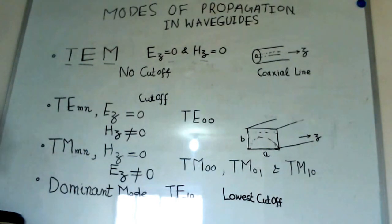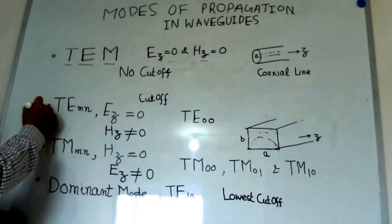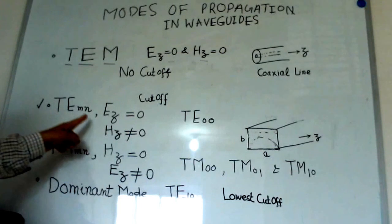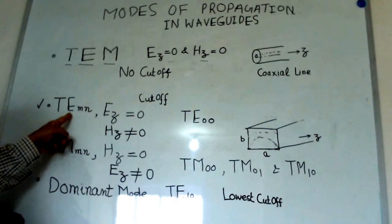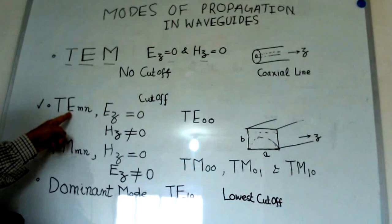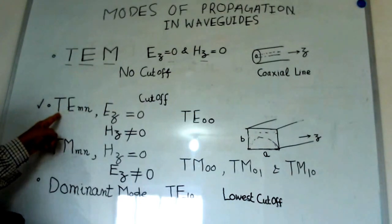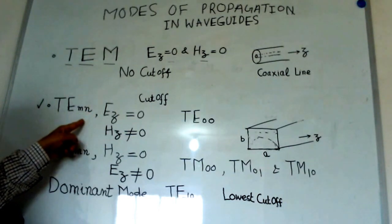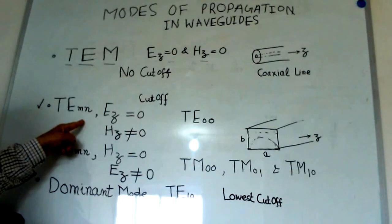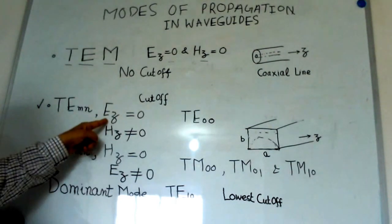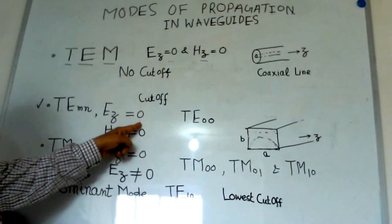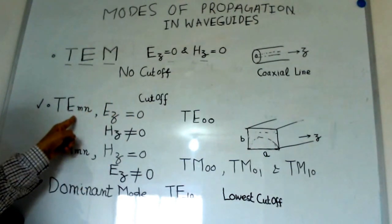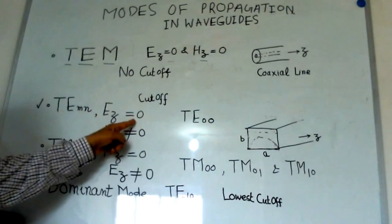It is either transverse electric or transverse magnetic mode. Let us see the first case, the transverse electric mode. What it indicates is that electric field is transverse to the direction of propagation. That means there should not be any electric field component in this Z direction. This is shown here that Ez is zero. For this particular mode, that is TEmn.